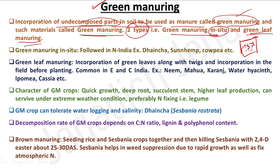The other type is green leaf manuring, used where there is no vacant land to grow a green manuring crop or where conditions are not suitable for raising one. In that case, we import green residue from other fields, field bunds, or other ecosystems and incorporate it into our field.